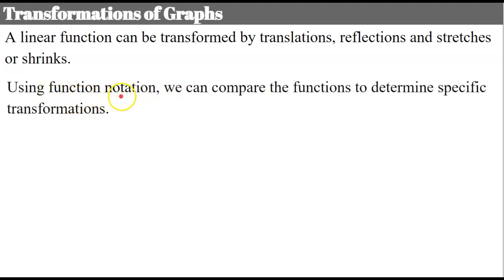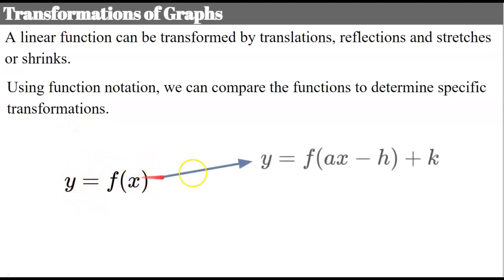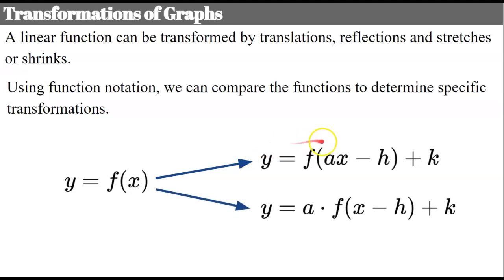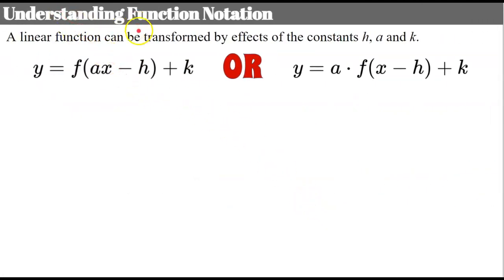We use function notation and we can compare the functions to determine the specific types of transformations that were applied. We start out with our function f and we have two forms of a function that has transformations applied to it. The difference between the two is our factor a — our constant — could be inside the parentheses affecting the inputs, or outside the parentheses affecting the outputs. Understanding function notation is going to be key in identifying the types of transformations applied to a linear function.